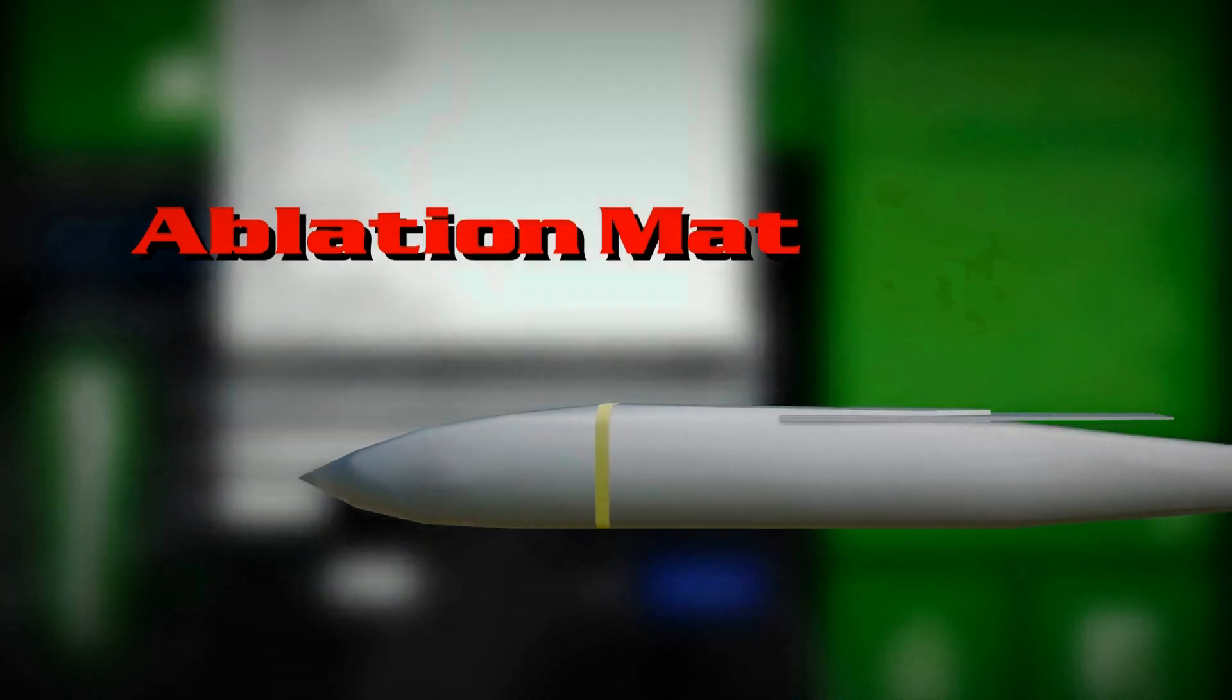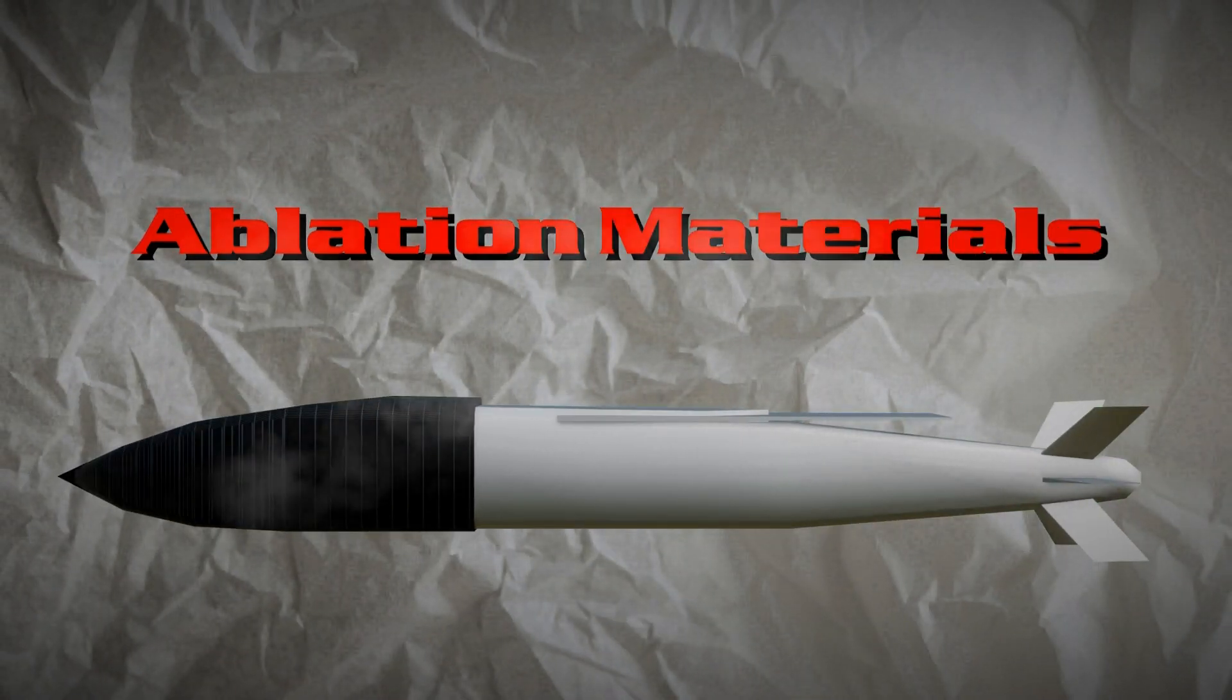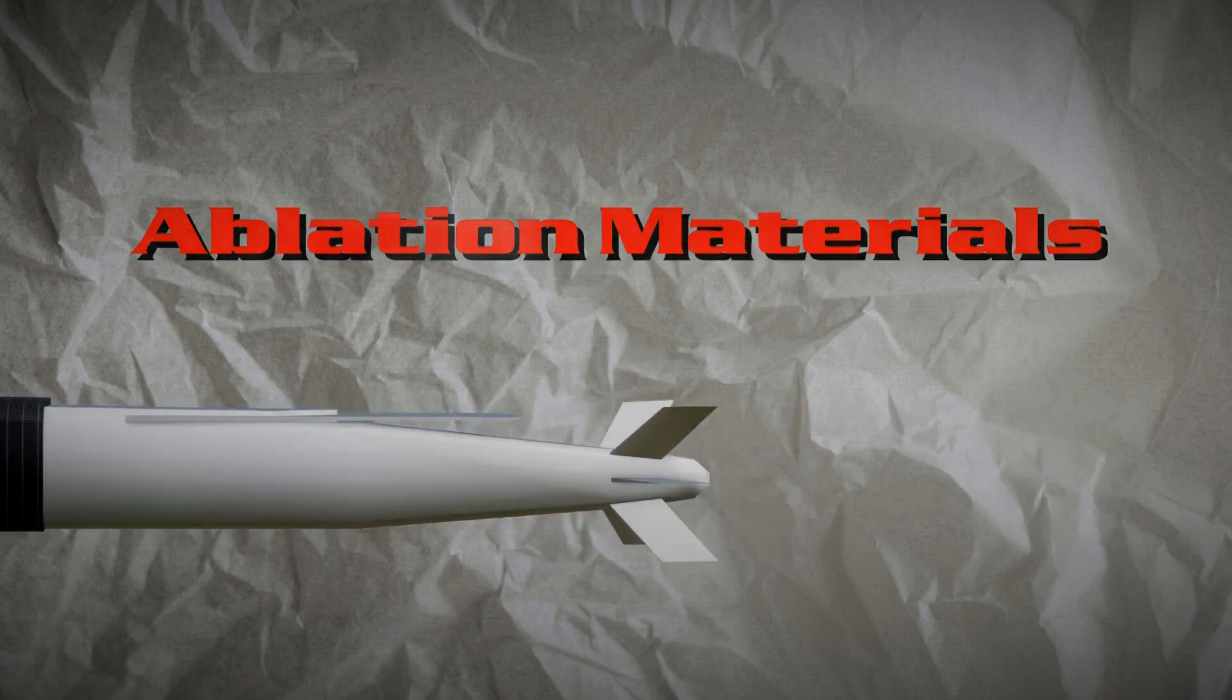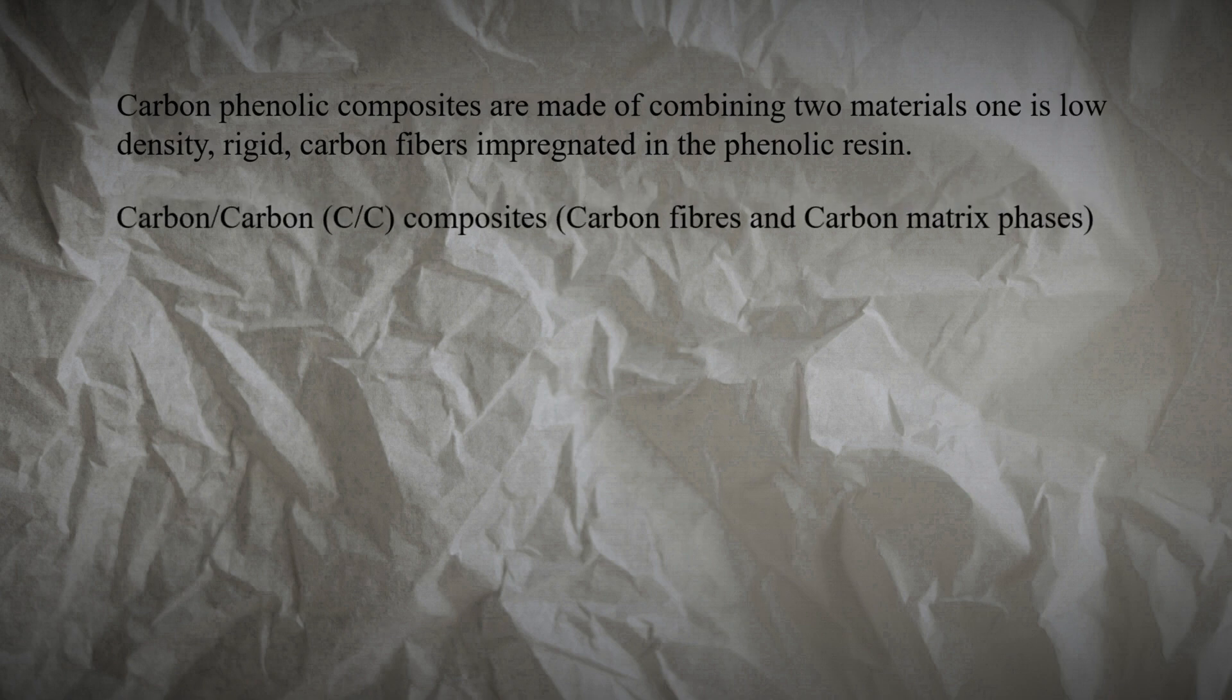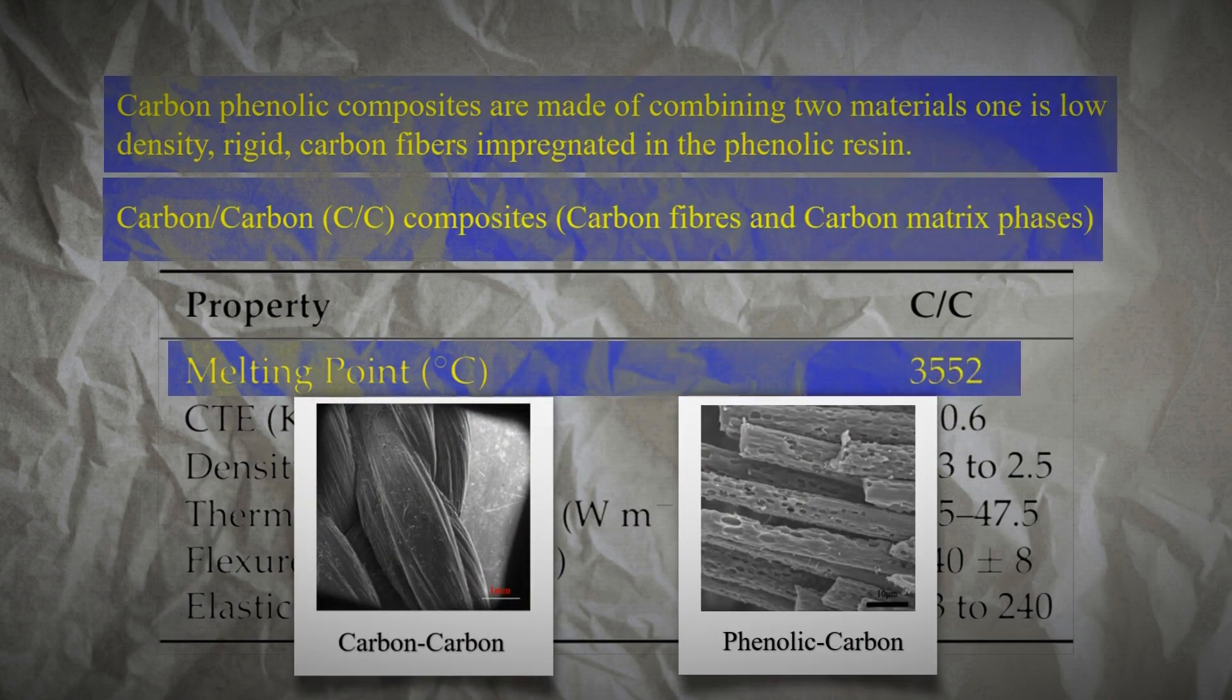Next, we have ablation materials. Imagine a shield that burns away to protect what's underneath. That's essentially what ablation materials do. Phenolic carbon and carbon-carbon are the champions here. They vaporize as they're exposed to extreme heat, creating a protective layer that shields the underlying structure.